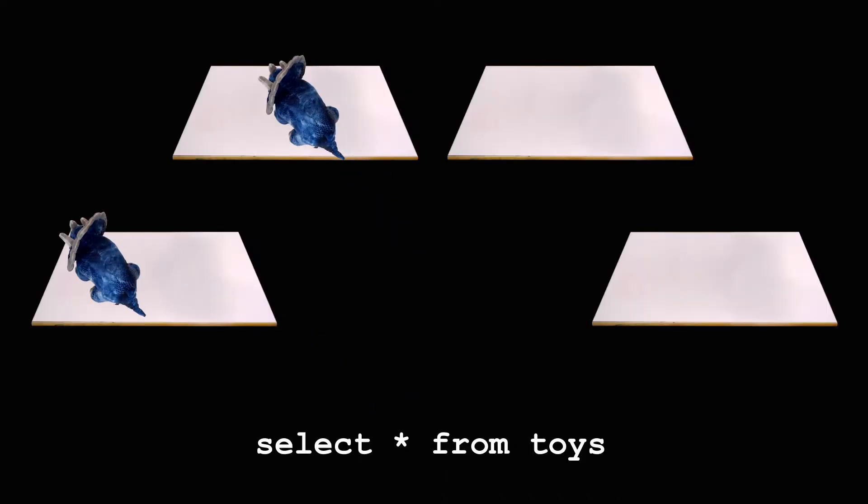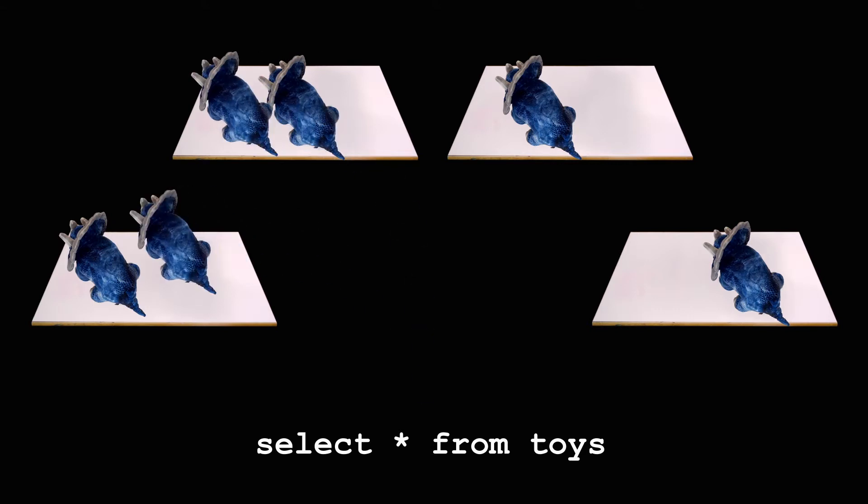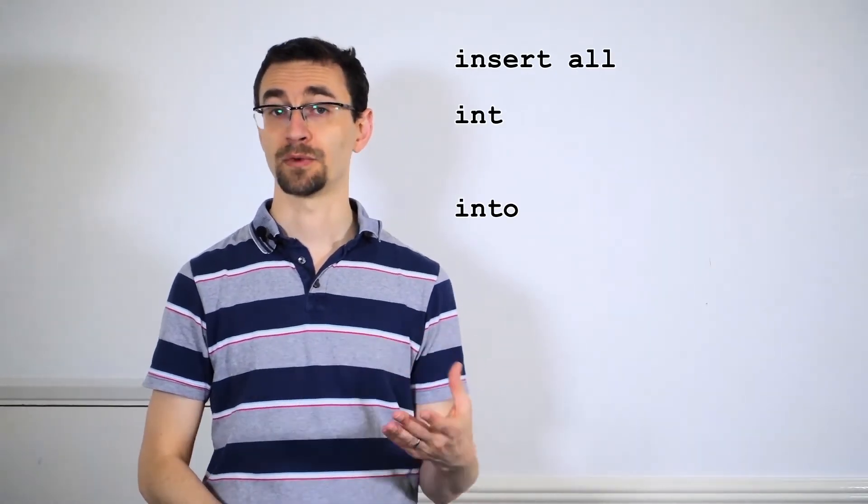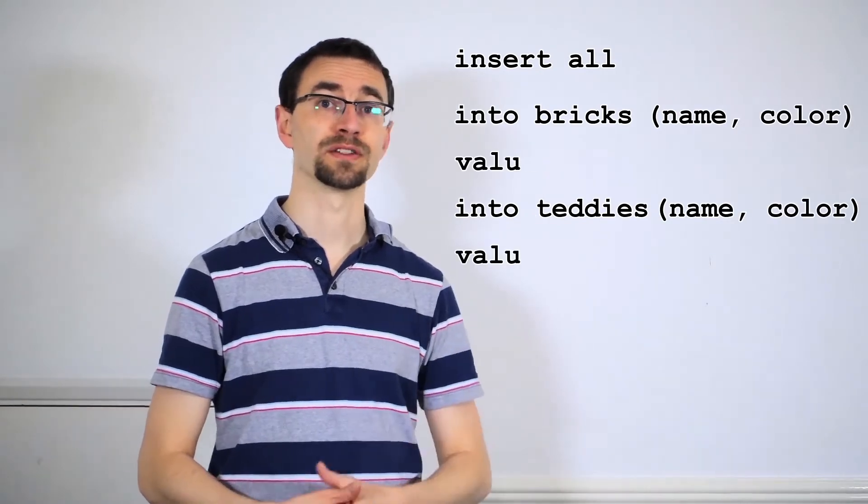For each row your query returns, an unconditional multi-table insert places a row in every table. To do this, start your SQL with insert all, then add the tables, their columns and their values clauses.